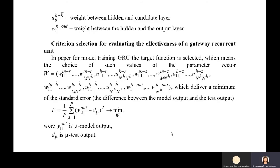Criterion selection for evaluation of the effectiveness of a gateway recurrent unit. In the paper for model training, the target function is selected, which means the choice of such values of the parameter vector which deliver a minimum of the standard error F.